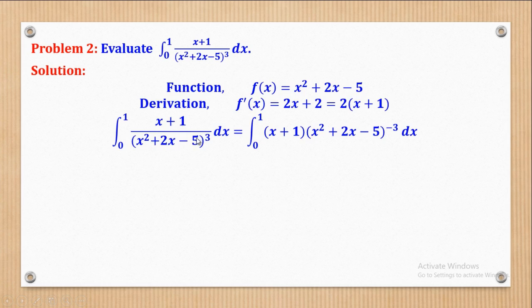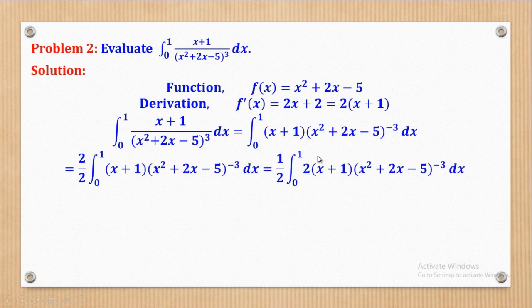We bring the denominator up to become a negative index, so we get (x + 1) multiplied by (x² + 2x − 5) raised to the power negative 3. We then need to make the derivative exactly match, so to obtain the factor of 2 we introduce an innocent expression of 2 over 2. Multiplying the integral by 2 over 2 and bringing the 2 inside, we remain with 1 over 2 outside the integral of 2(x + 1) times (x² + 2x − 5) raised to the power negative 3. We now have a function raised to the power negative 3, its derivative, and a constant k.